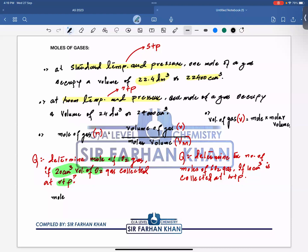You all know that the volume of oxygen is basically 20 cm³ at RTP. And the moles of gas equals to 20 cm³ volume given and room temperature 24,000 cm³. So it gives 8.33 times 10 to the power minus 4 moles.